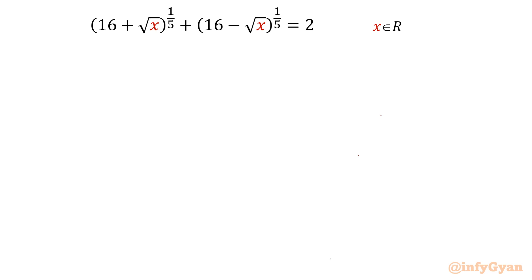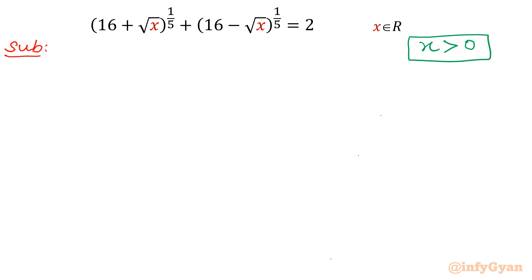Let me start directly by writing its domain. x is positive always because square root of x is involved. Now the second important thing is what substitution we should give. Without substitution we cannot solve this problem. Should we consider (16 + √x) equal to something, or (16 + √x)^(1/5)? Let me consider the complete expression including the power — this term is u.